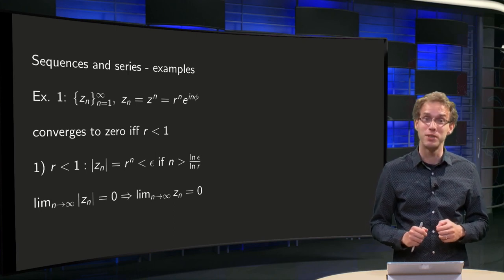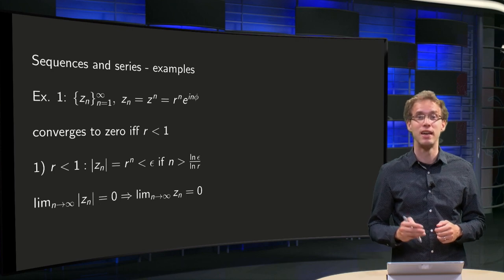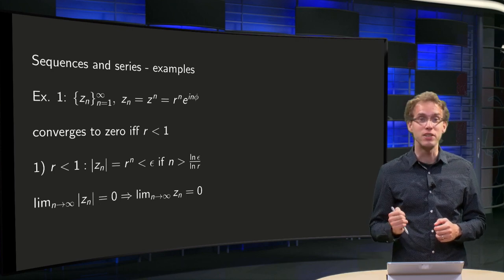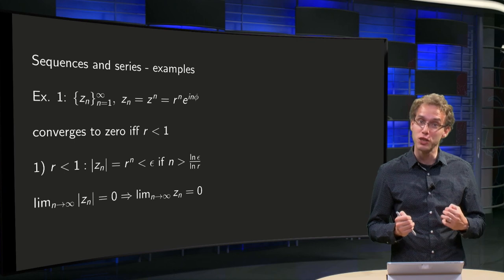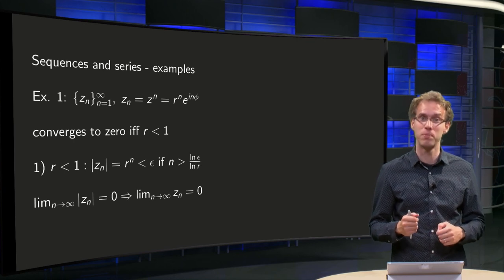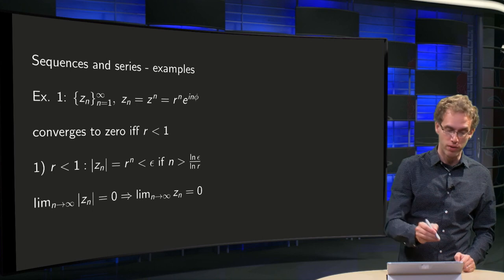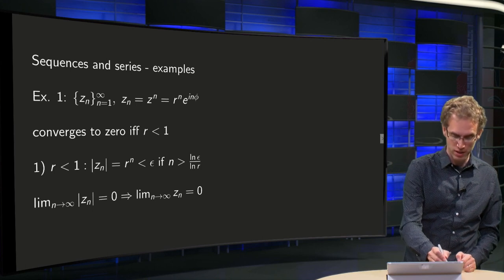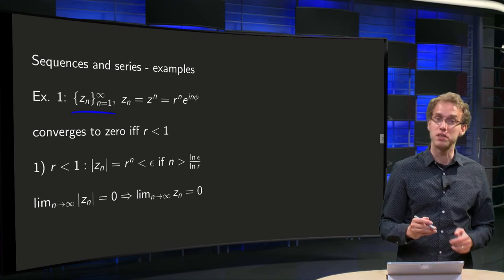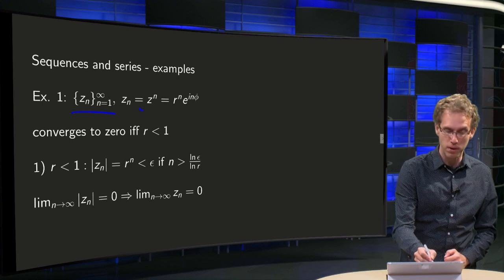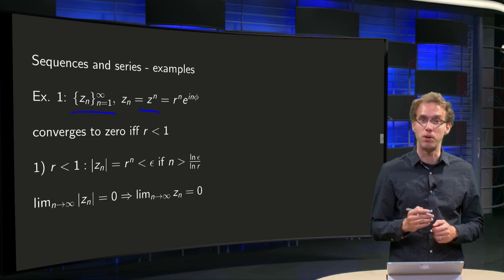Complex sequences and series behave in the same way as their real counterparts. This means that the computations are also quite similar, as you will see in the examples in this video. Let us start with the sequence. We have the sequence n from 1 to infinity, and we take z_n to be z to the power n, where z is some fixed number.